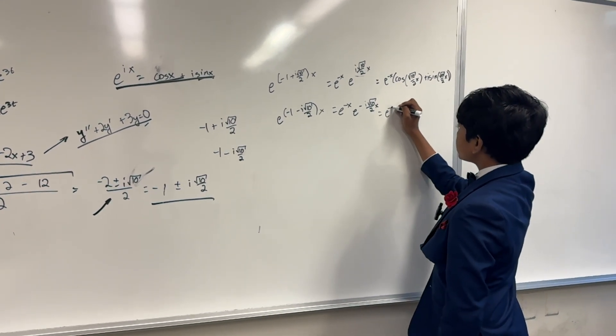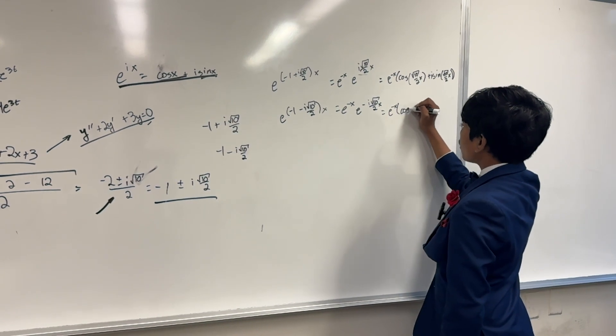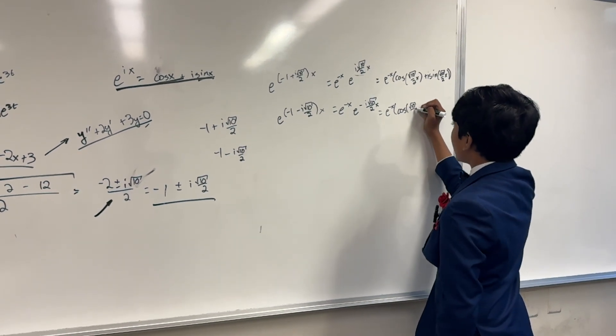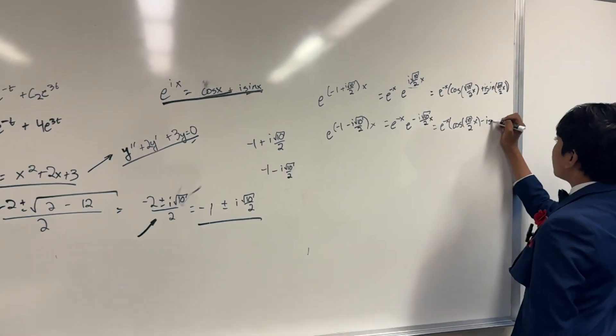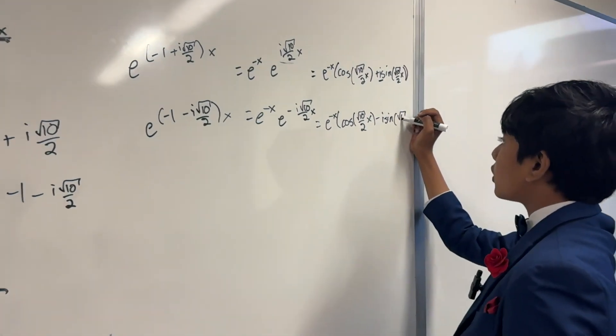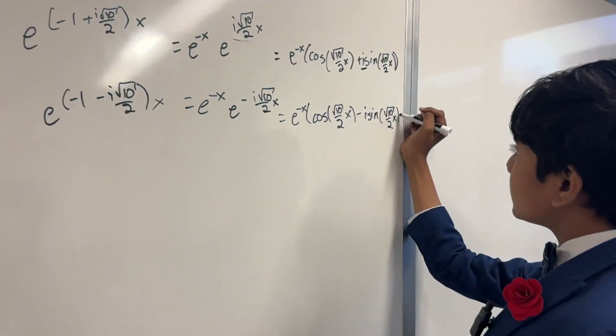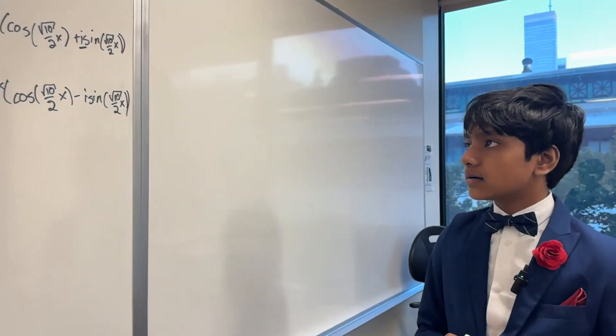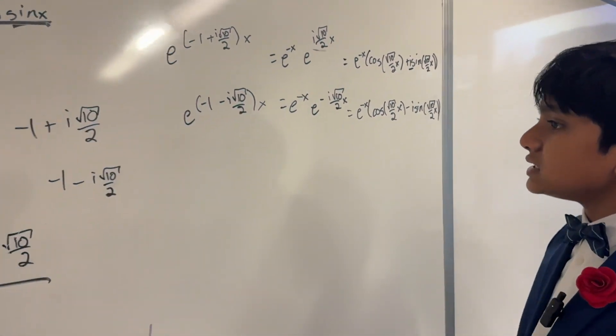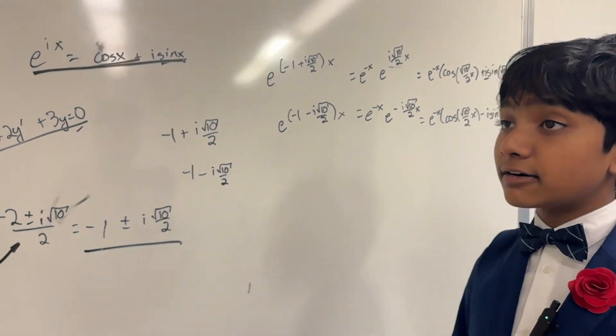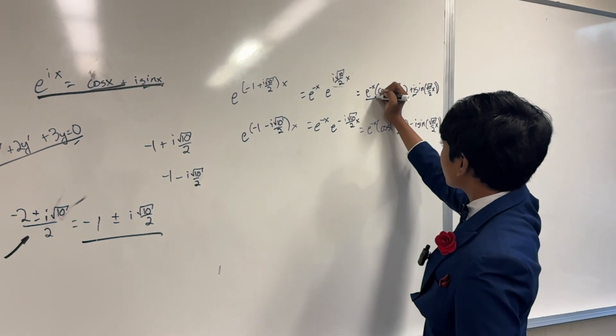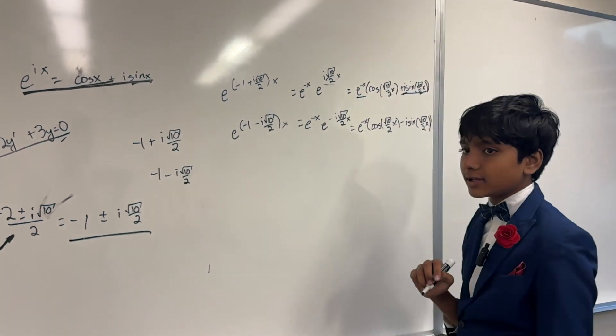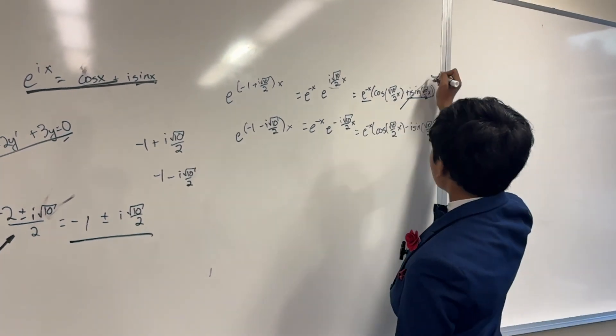But then you might start asking, well Suborna, what was the point of doing this if we end up with an i right over here anyway? I thought our goal was to eliminate the imaginary part. And yes, that's correct. But this actually makes it much easier for us to remove the imaginary part. Because now, all we have to do is we know that combining this with this is going to create something imaginary, so we cross this off.